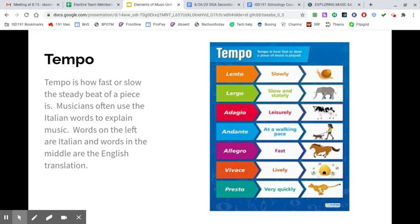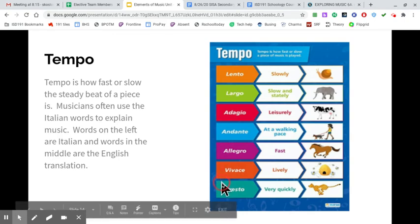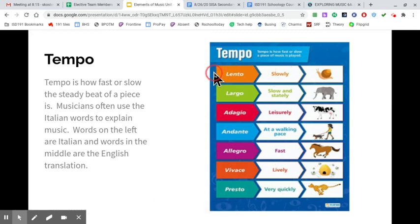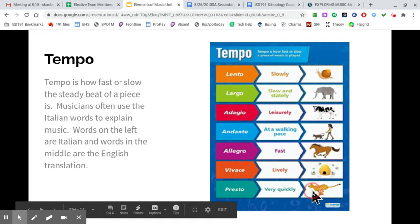The first one is tempo. Tempo is how fast or slow the steady beat of a piece of music is. So if you look at my cursor here, you can see there's a list. And this is interesting. When we talk about music, it's often in Italian. So all these words here are Italian. And in the middle, we have the English translation. For example, lento is Italian for really slowly. And here they use the example of a snail for super slow.